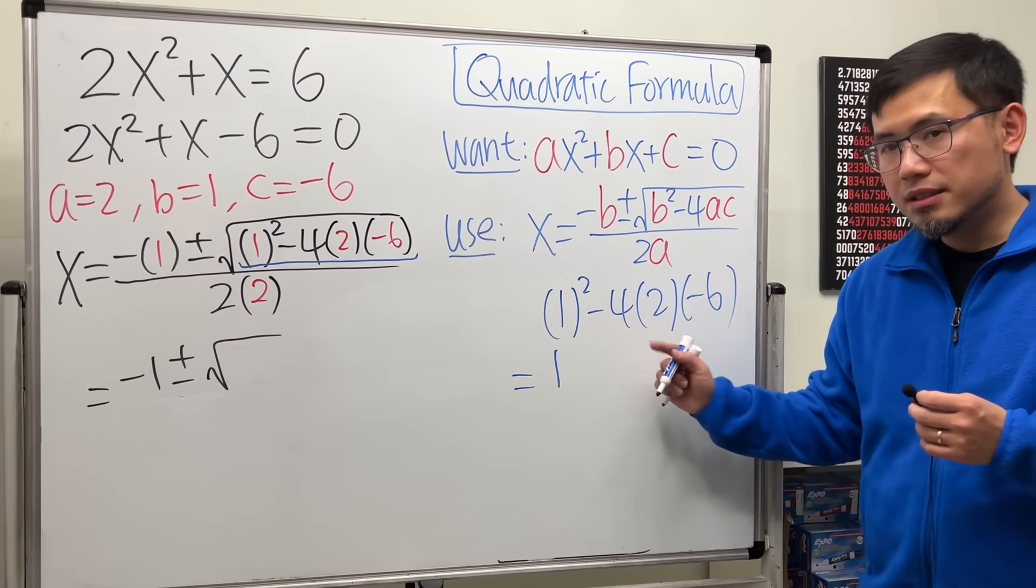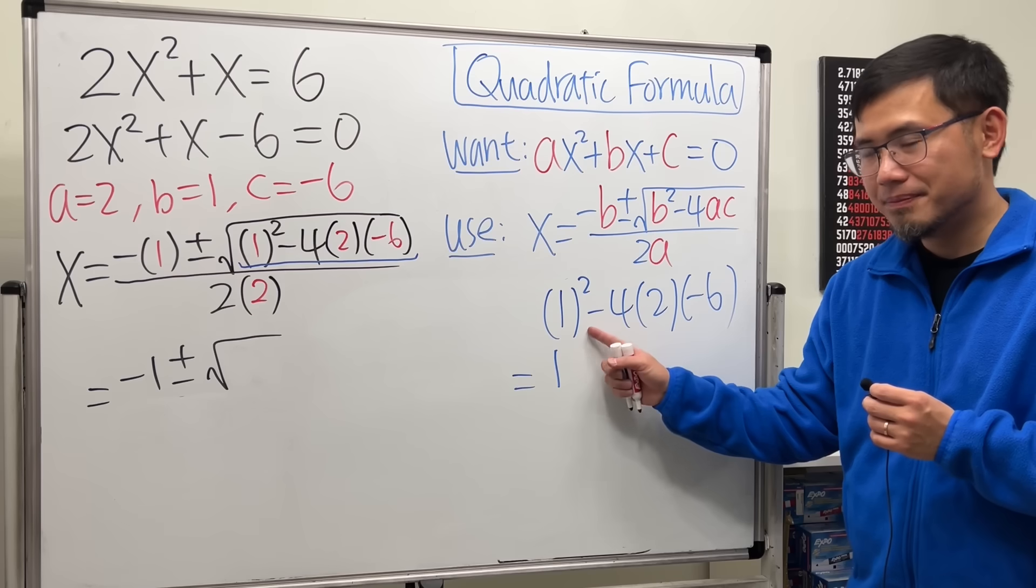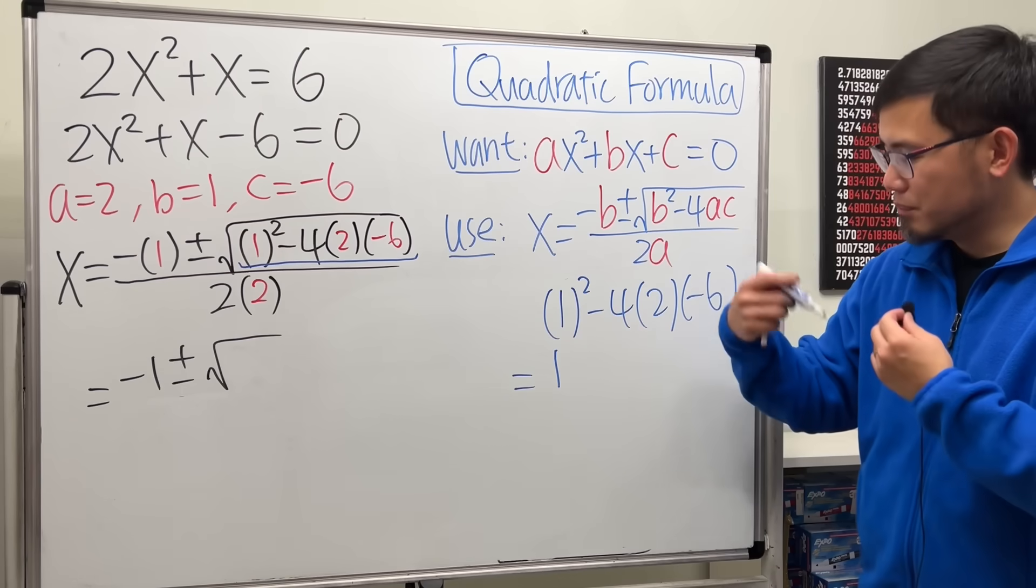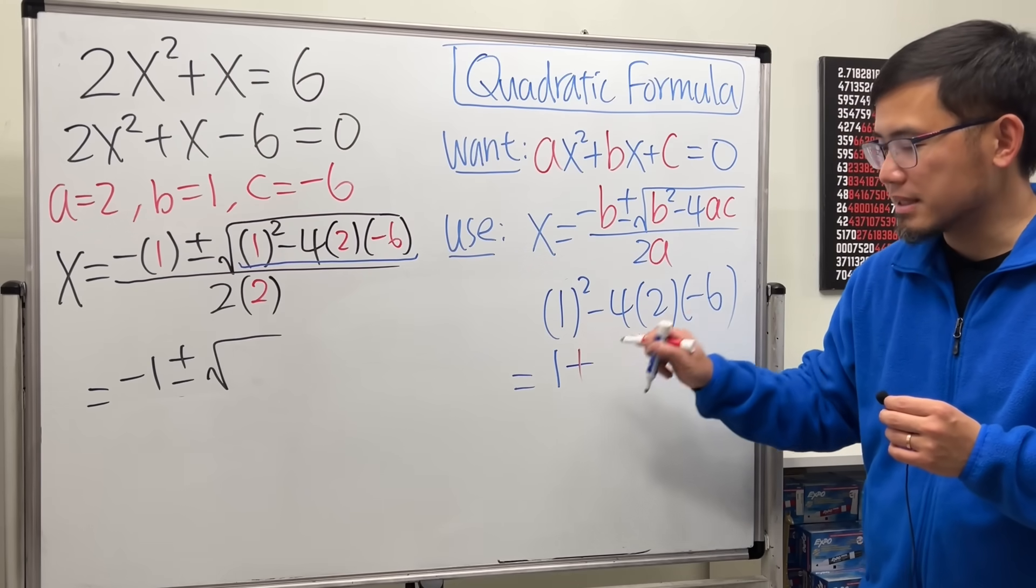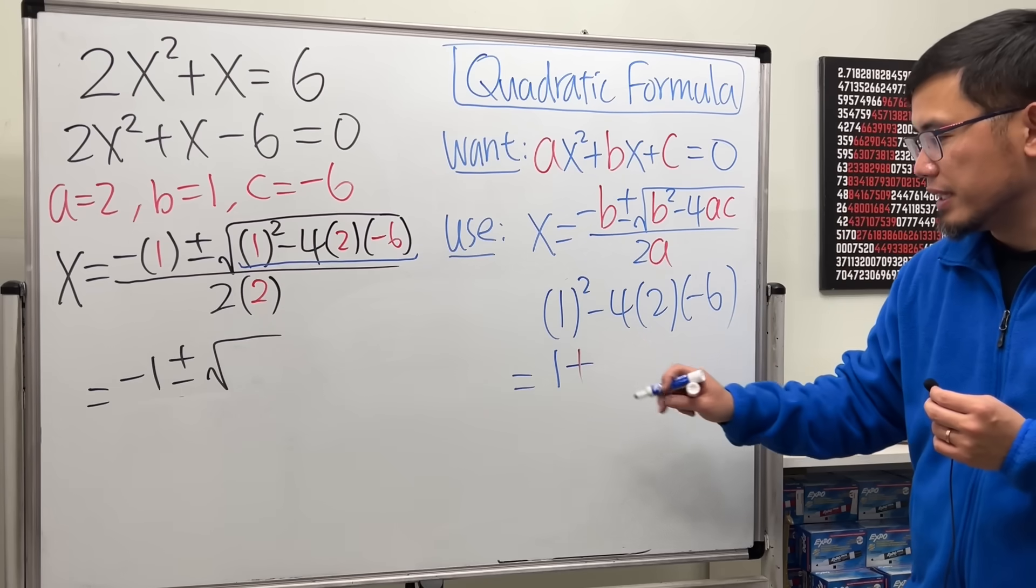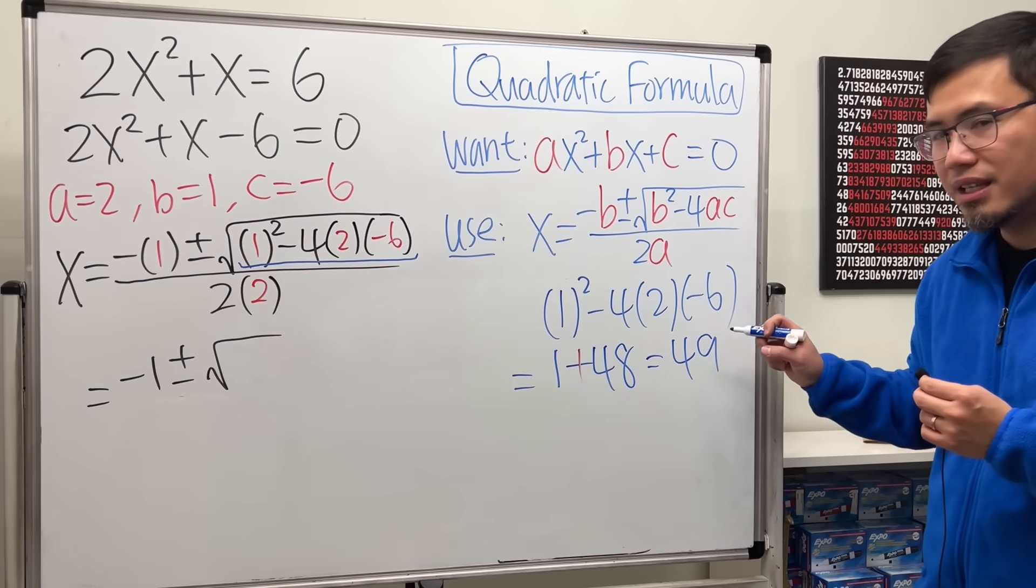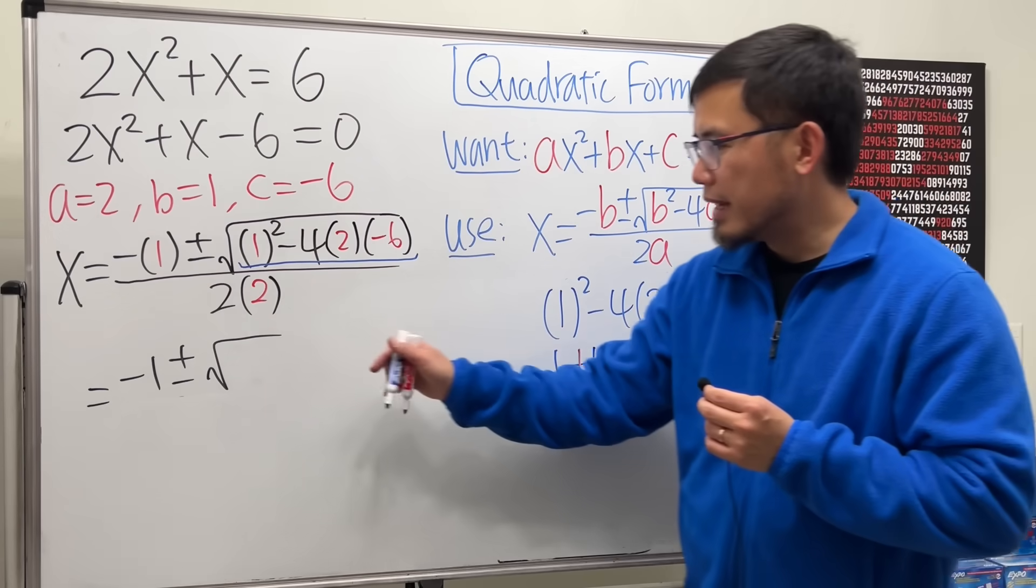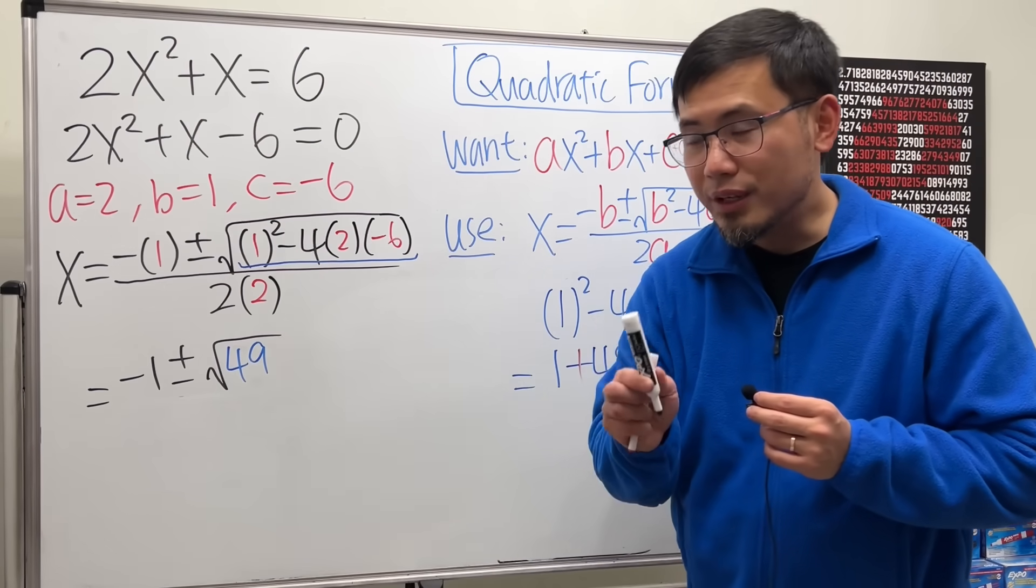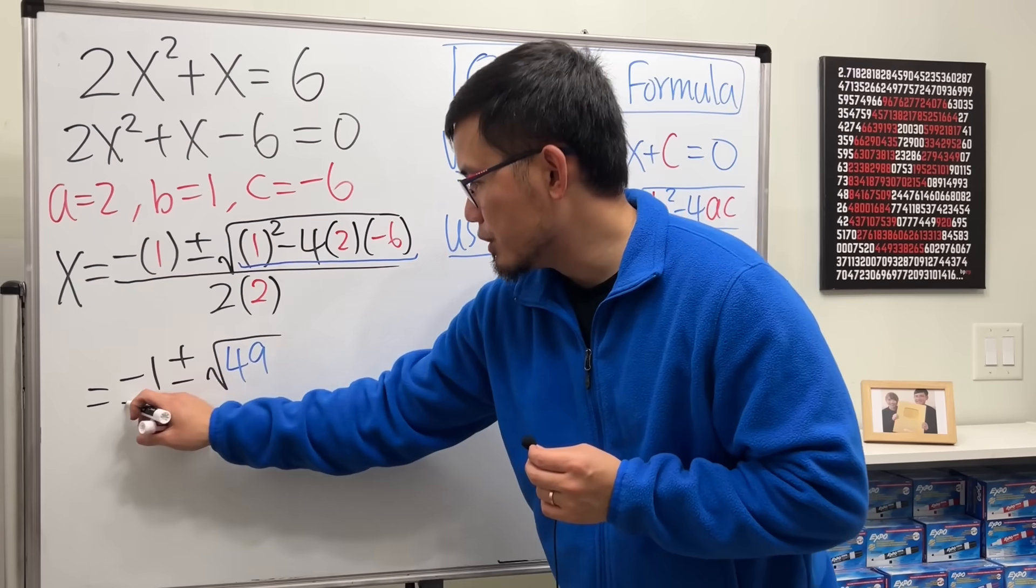1 squared is 1, and then this is how I like to do this part. I like to work out the sign first. Negative times positive which is negative, and then we multiply by one more negative so all in all we get positive. And then I'll do the numbers. 4 times 2 is 8, 8 times 6 is 48. And then 1 plus 48 we get 49. And this is the number that goes inside of this square root. And don't forget that we still have all this over 2 times 2 which is 4.